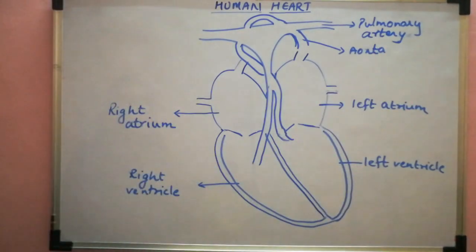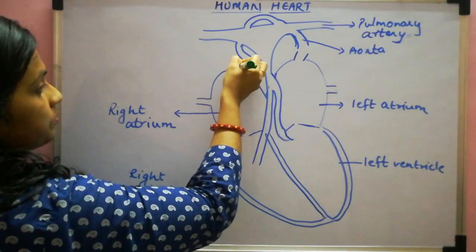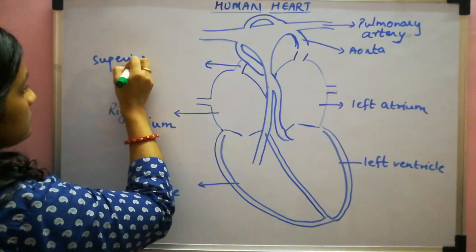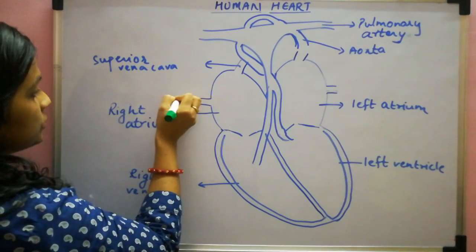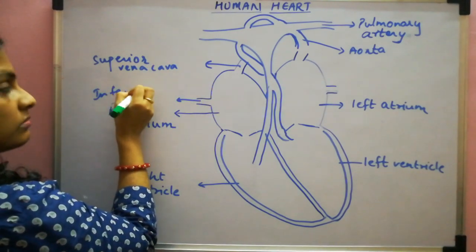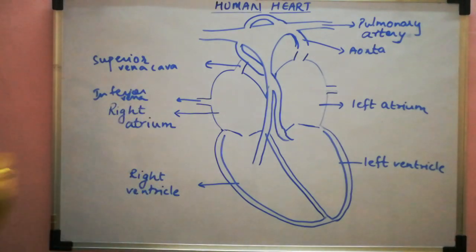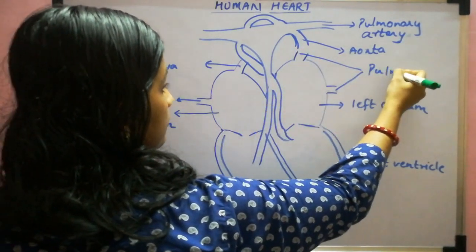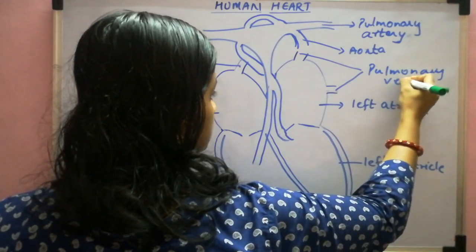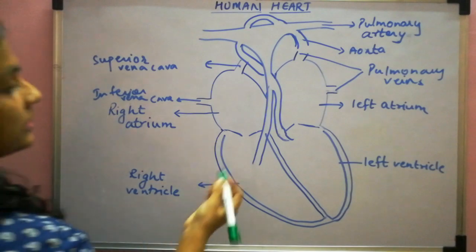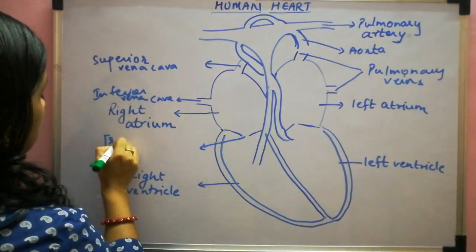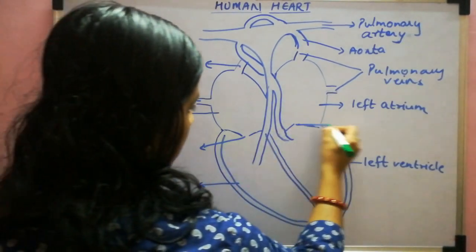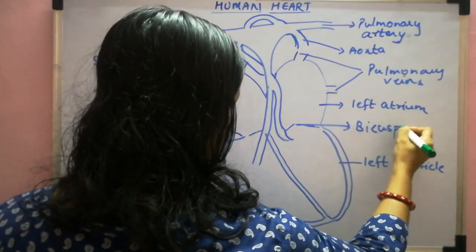Then next are the superior and inferior vena cava. The upper one is the superior vena cava, and the lower portion is the inferior vena cava. Then these two are the pulmonary veins. The valve on this side is known as the tricuspid valve, and the valve on this side is known as the bicuspid valve.